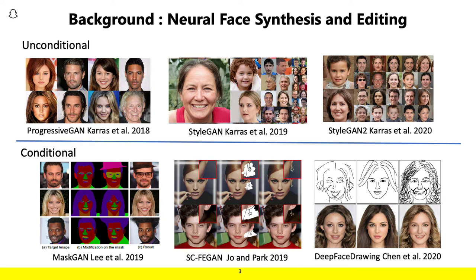Recent work on neural face synthesis and editing has achieved some fairly impressive results. You see example results from unconditional full face synthesis, like from progressive GAN or style GAN, as well as conditional approaches that can take some form of user input, such as segmentation masks or sketches, and synthesize or edit full face images. While the latter are fairly impressive and close to what we want, they're somewhat limited in the flexibility and quality of the manipulations to complex structures such as hair, which generally means that hair requires several specific concerns that we will need to address separately from the rest of the face.